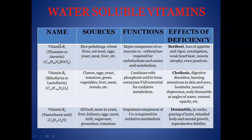Let us look at each vitamin in detail. Vitamin B1, whose name is thiamine, is sourced from rice polishings, wheat flour, oatmeal, eggs, meat, and liver. Its function in the body is that it is a major component of a coenzyme required for carbohydrate and amino acid metabolism. The deficiency disease it causes is beriberi, and other effects include loss of appetite, constipation, and even paralysis.